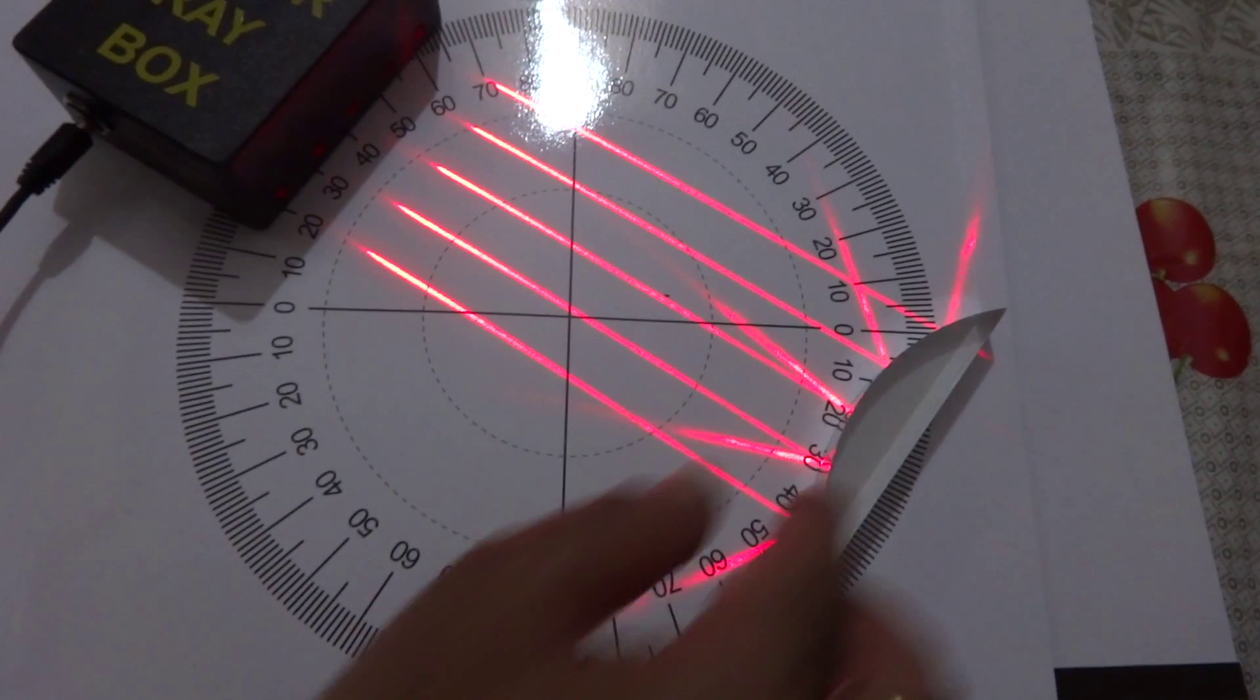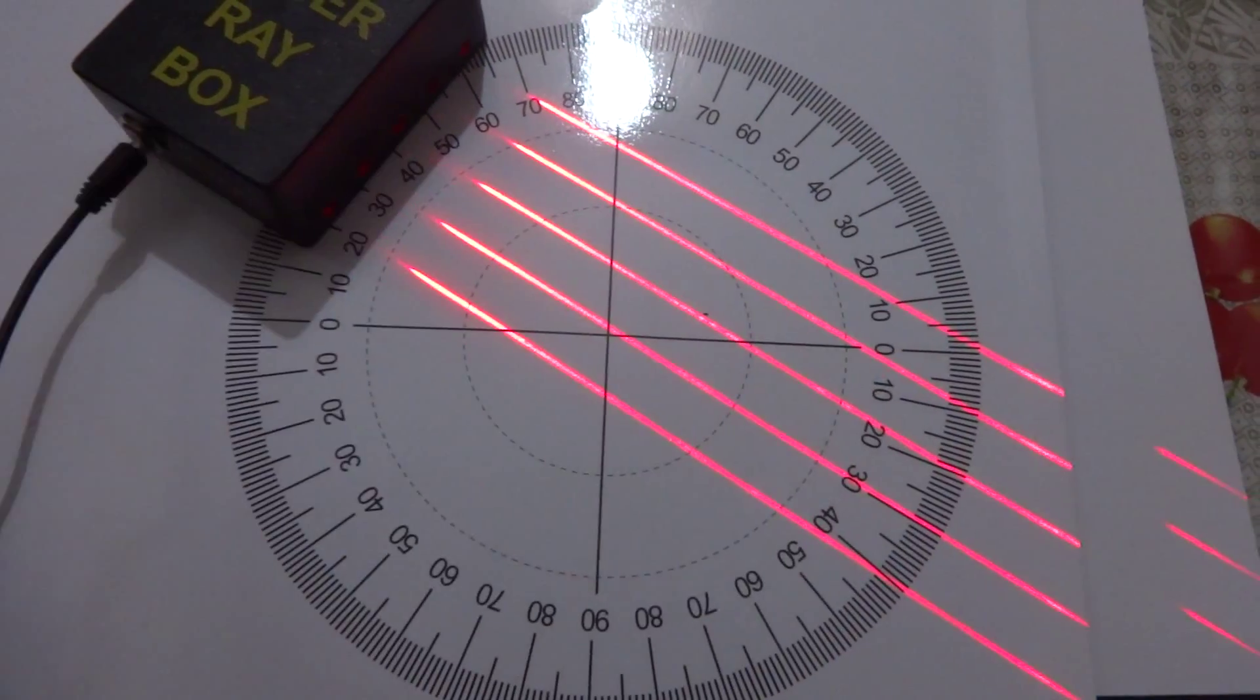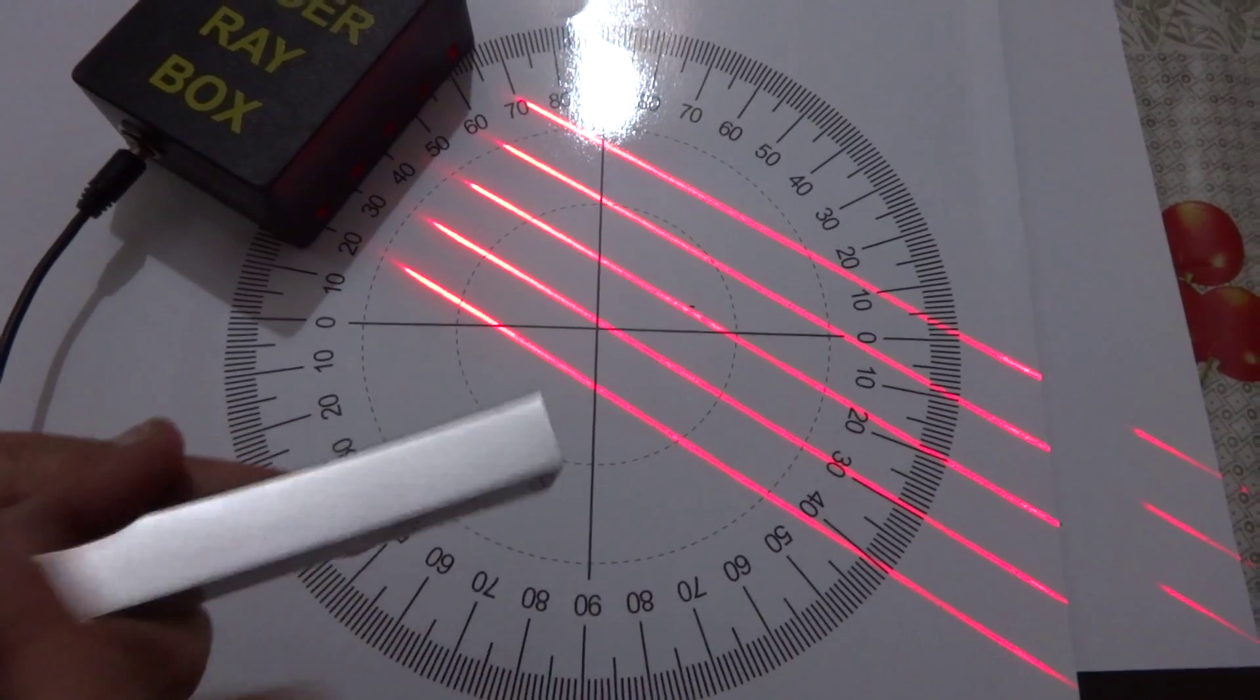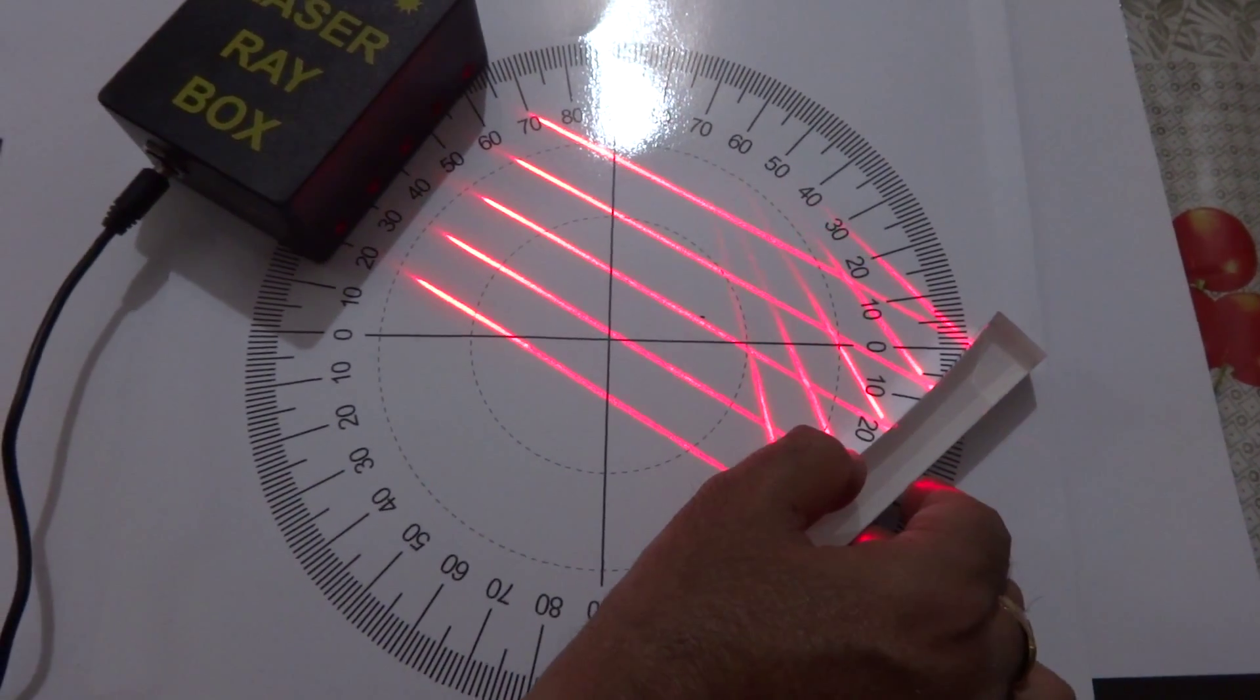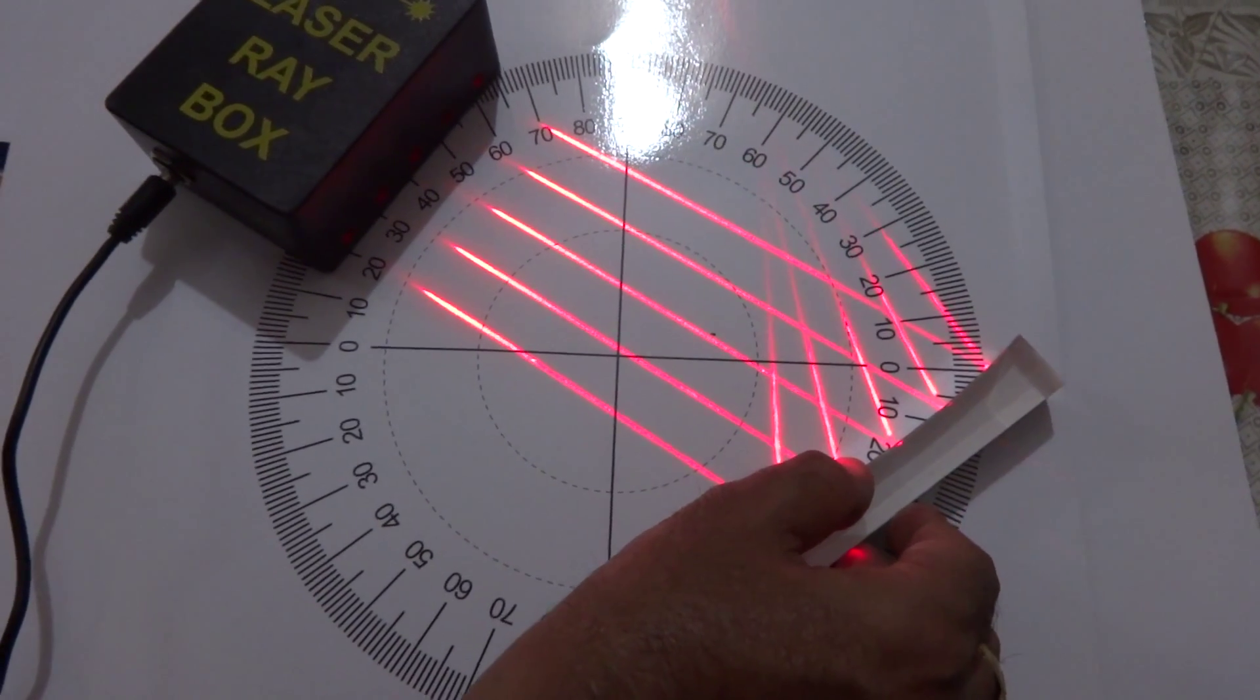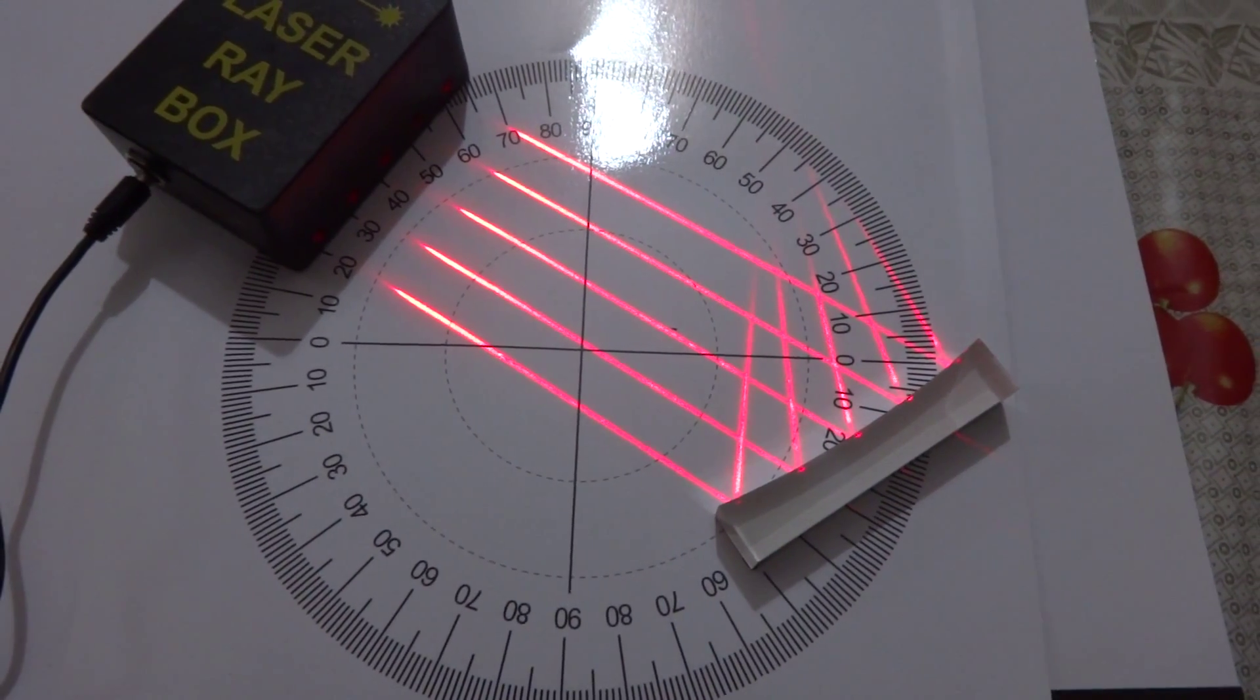Now, in place of this convex surface, if I keep this concave, these are all inward. If I keep like this, the rays are meeting at one particular point.